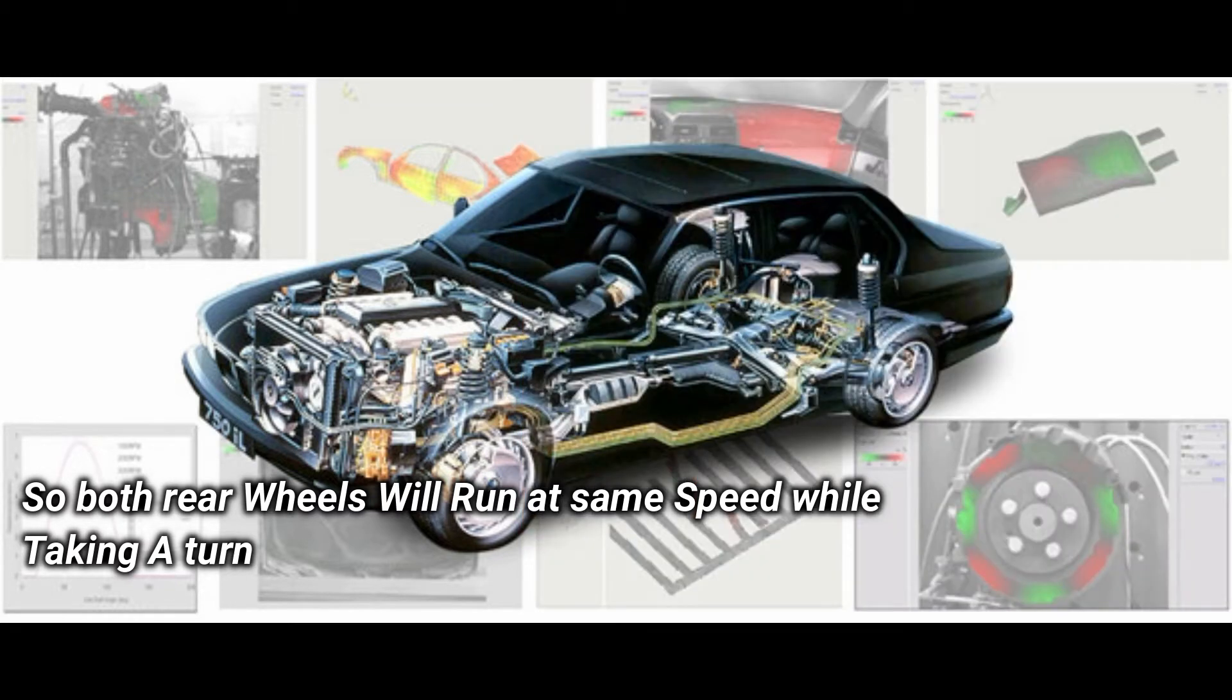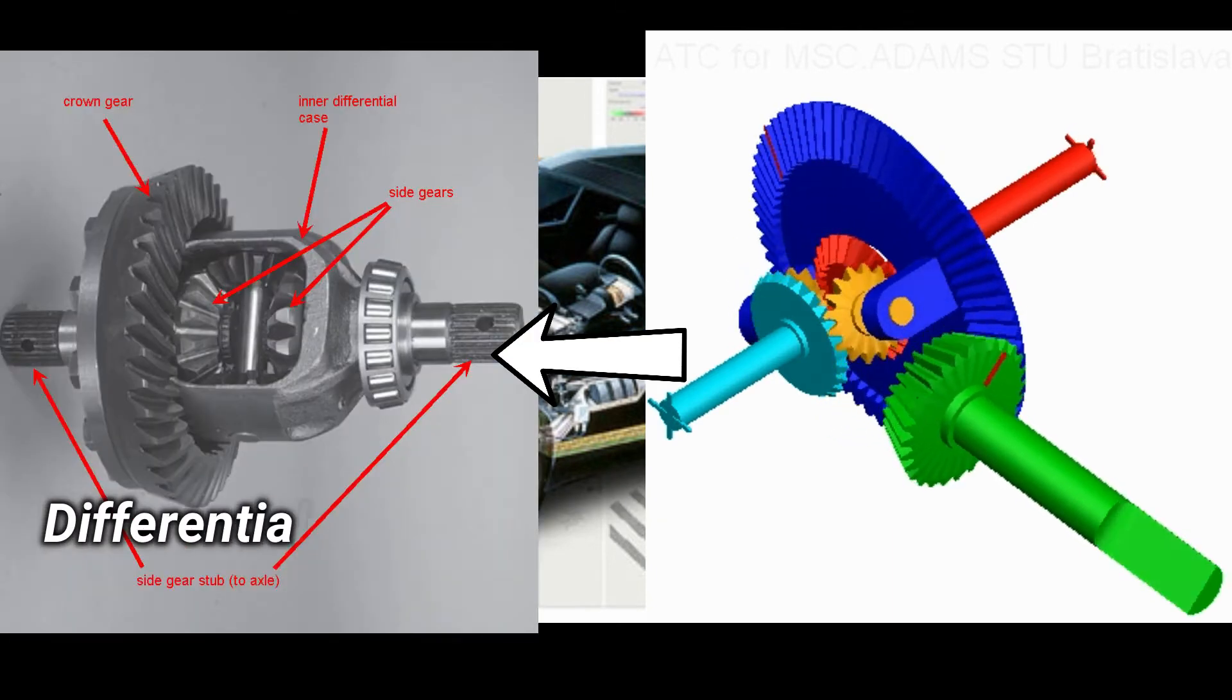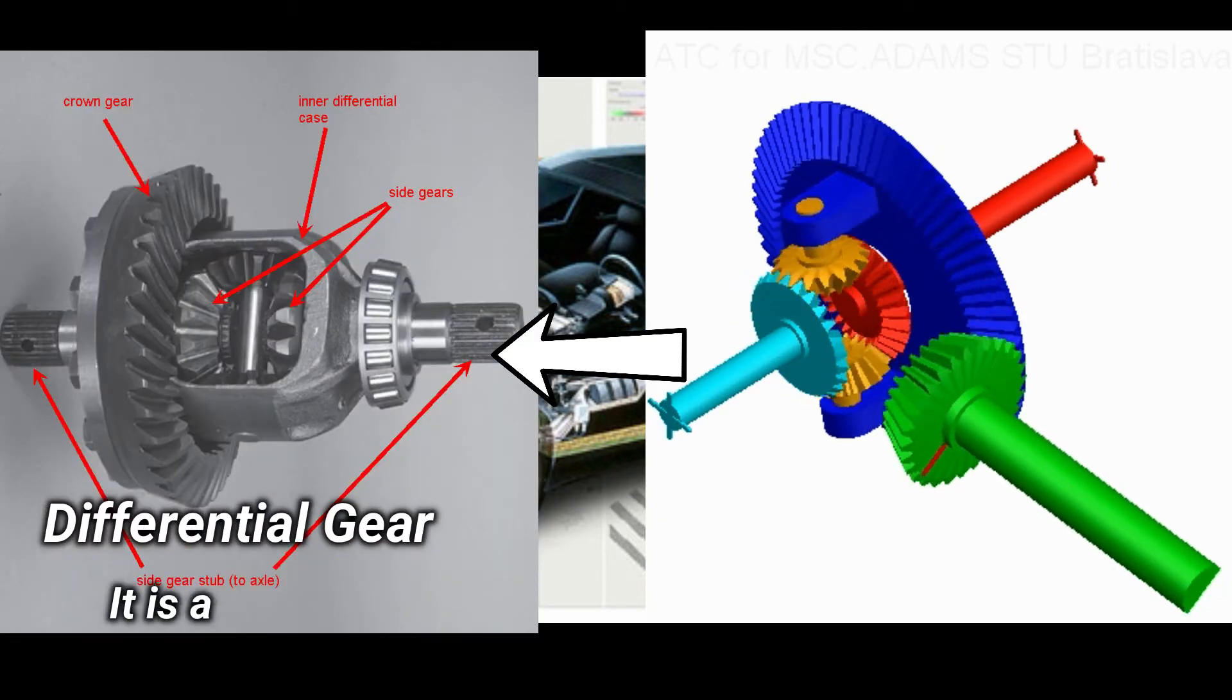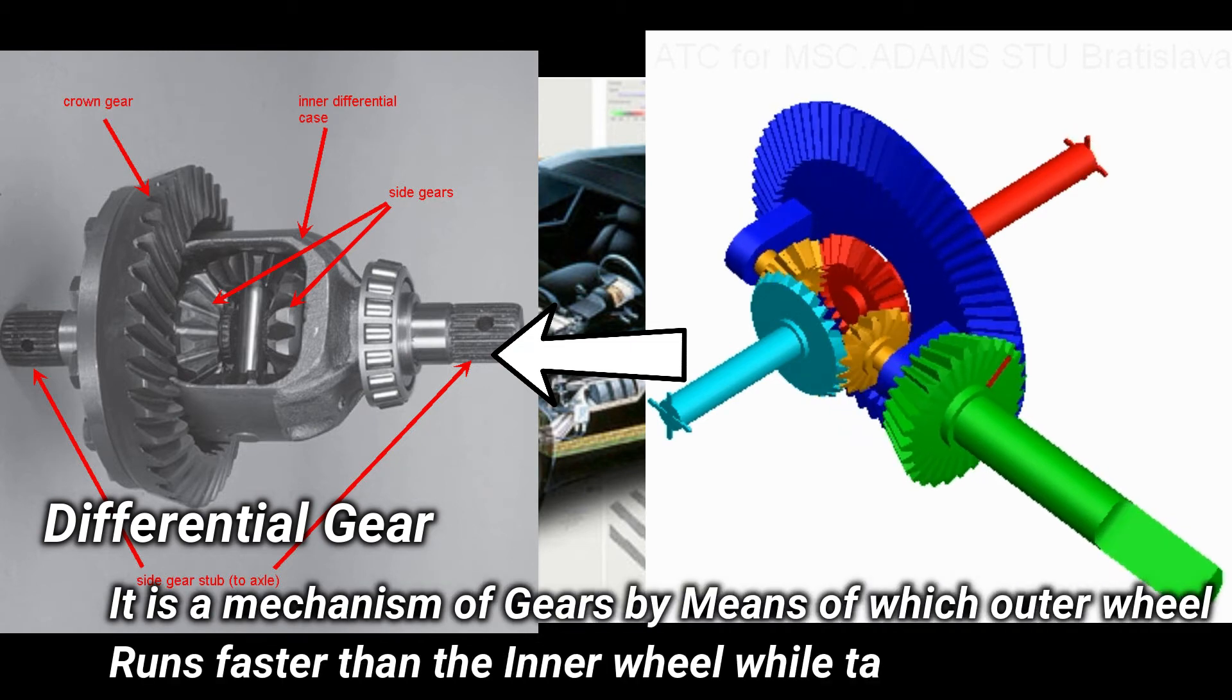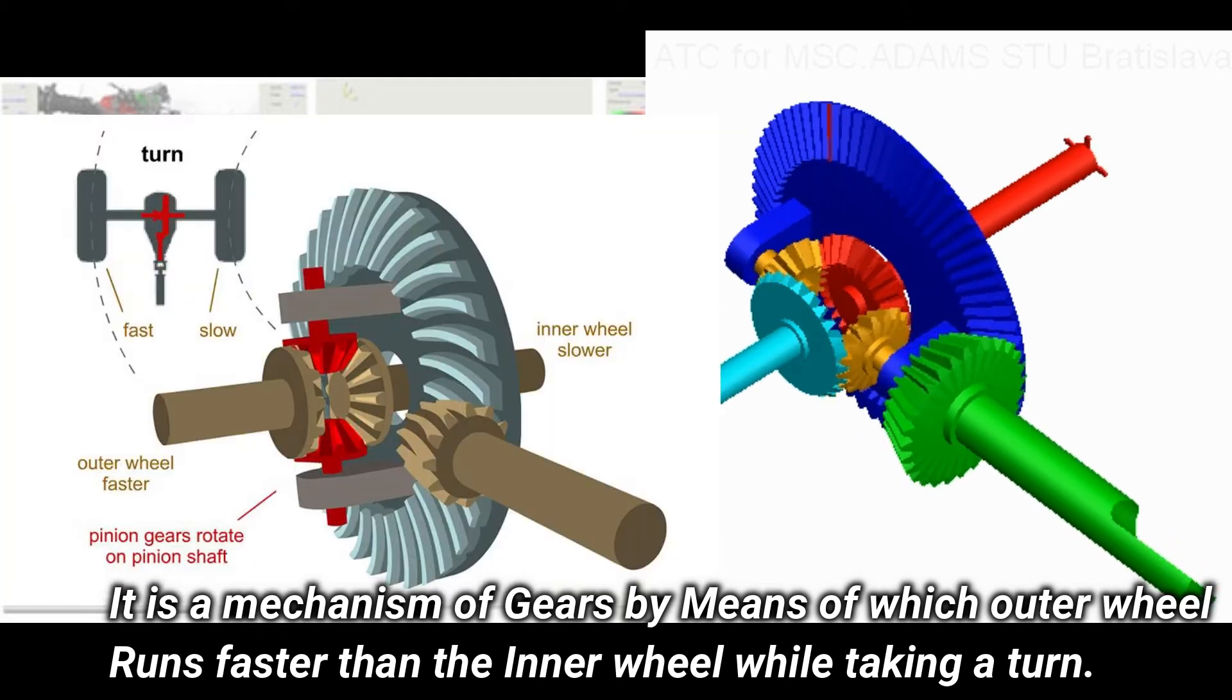To eliminate this problem, a device is used which is known as differential gear. Differential is the mechanism of gears by means of which the outer wheel runs faster than the inner wheel while taking a turn or moving over an upheaval road.